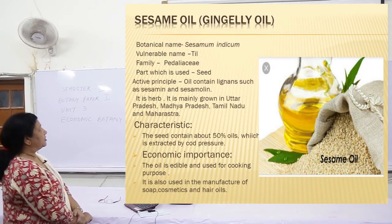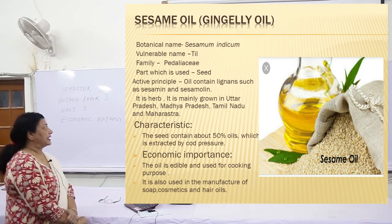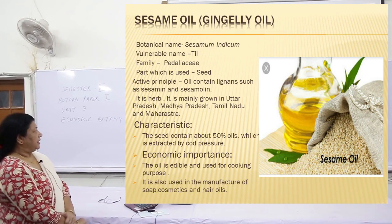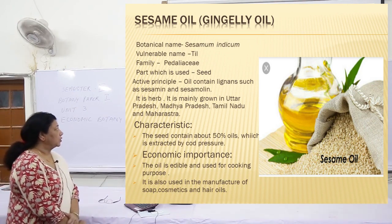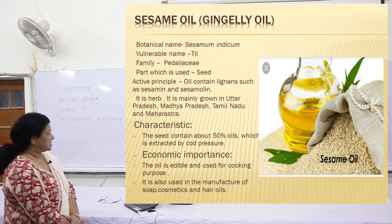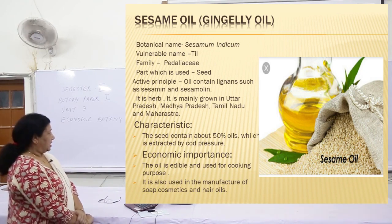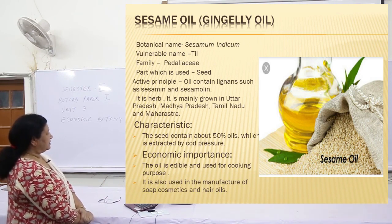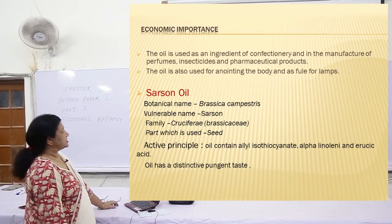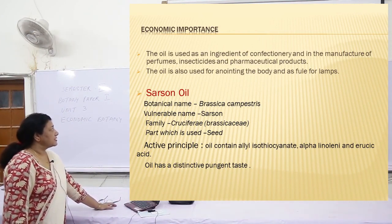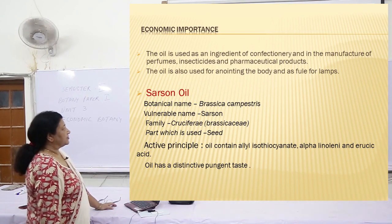Coming to gingely oil or sesame oil. Botanical name: Sesamum indicum. Vernacular name: til. Family: Pedaliaceae. The part used is the seed. The active principle is that the oil has lignans such as sesamin and sesamolin. It is a herb grown in Uttar Pradesh, Madhya Pradesh and Maharashtra. The seed contains 50% oil, which is extracted by cold pressure. Economic importance: the oil is edible and used for cooking purposes, manufacture of soap, cosmetics and hair oils. The oil is also used as an ingredient in confectionery and in the manufacture of perfumes, insecticides and pharmaceutical products. It is also used for applying on the body and as a fuel for lamps.